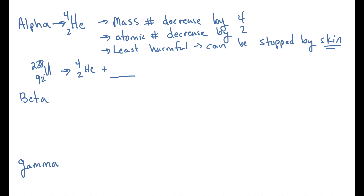We know that if we started with 92 and we have two here for the alpha particle, there's going to have to be a 90 here, and the atomic number 90 is going to tell us that this is going to be thorium. This would be in a multiple choice type question, so you don't need to know that thorium is 90. But we also need to know that the mass number is going to decrease by four. You need to know this decreases by four and this decreases by two.